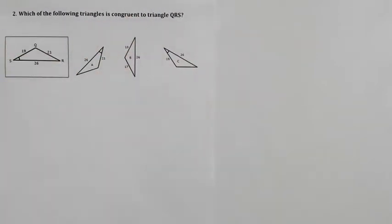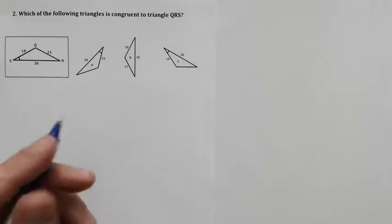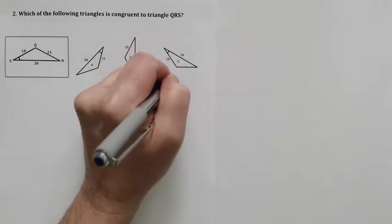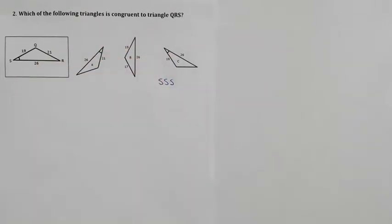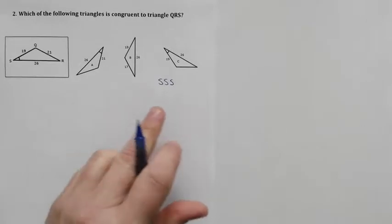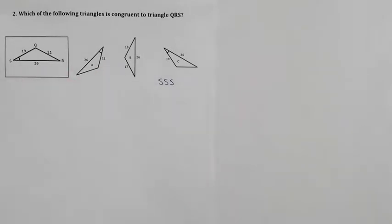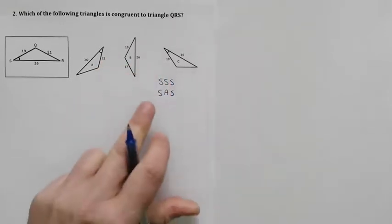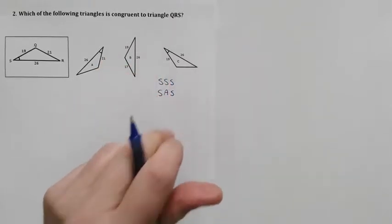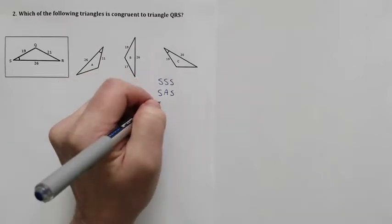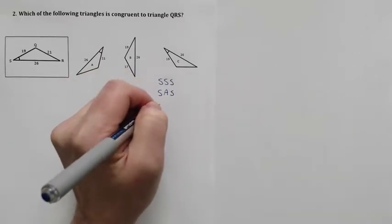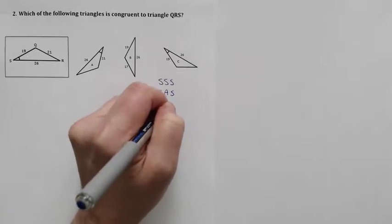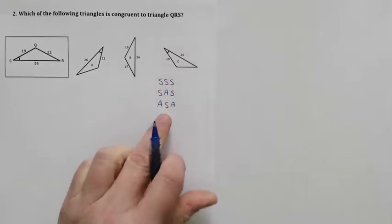I'll remind you of the three proofs that we could use, the three conditions that would allow me to say that these triangles are congruent. If they have side-side-side, all three of the same sides, we can say they're congruent. If they have side-angle-side, two matching sides with an angle in between. Or if they have angle-side-angle, two known angles with a matching side in between.